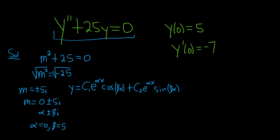Here α is 0, so e^0 is 1. This simplifies to c₁cos(5x) plus c₂sin(5x).